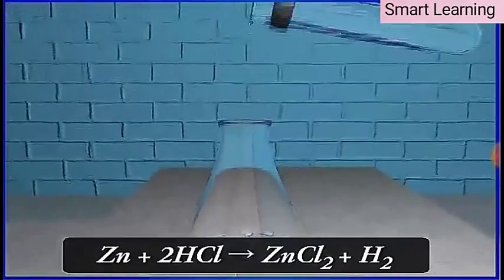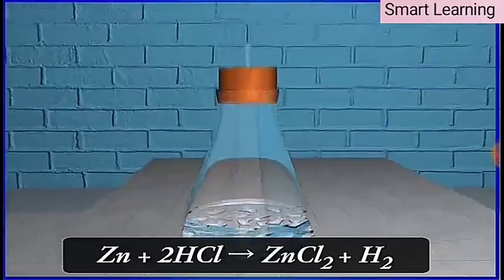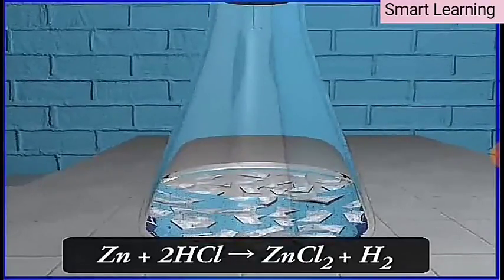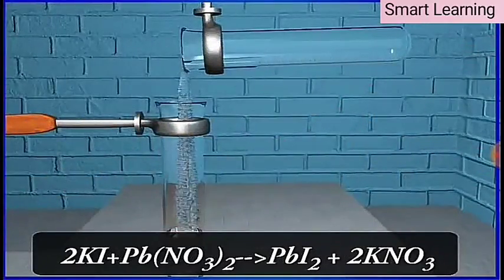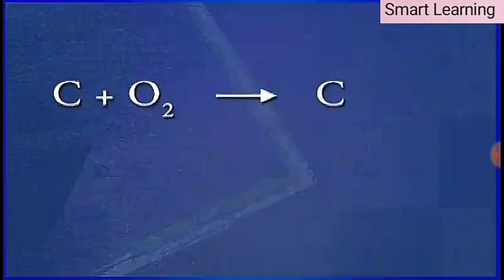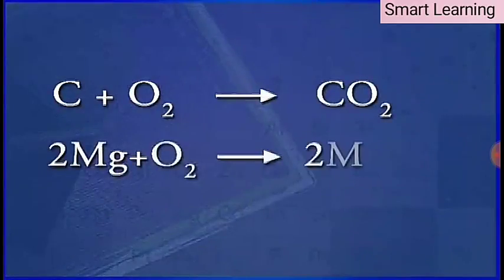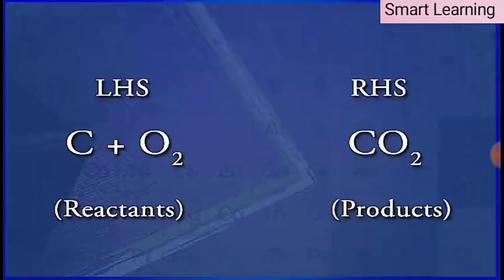We all know that whenever a chemical change occurs, a new substance is formed. Such a change is referred to as a chemical reaction. A chemical reaction can be represented by writing the chemical formulas of the reactants and the products. Such representation is known as a chemical equation. In a chemical equation, the reactants are written on the left hand side (LHS) and the products are written on the right hand side (RHS).